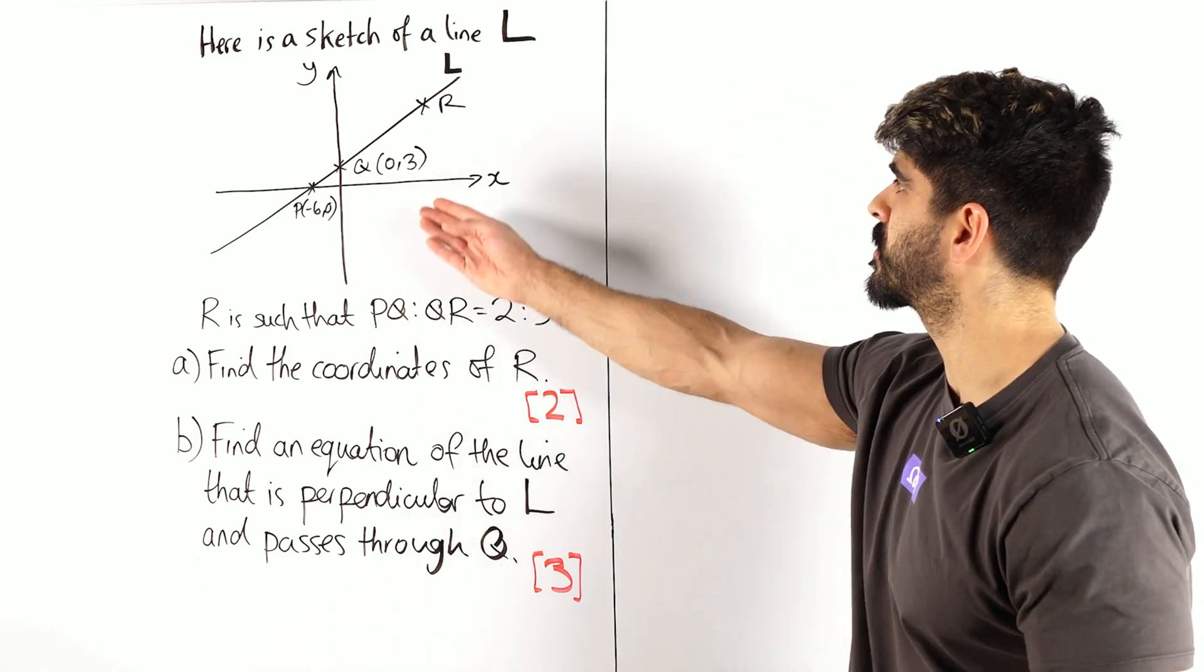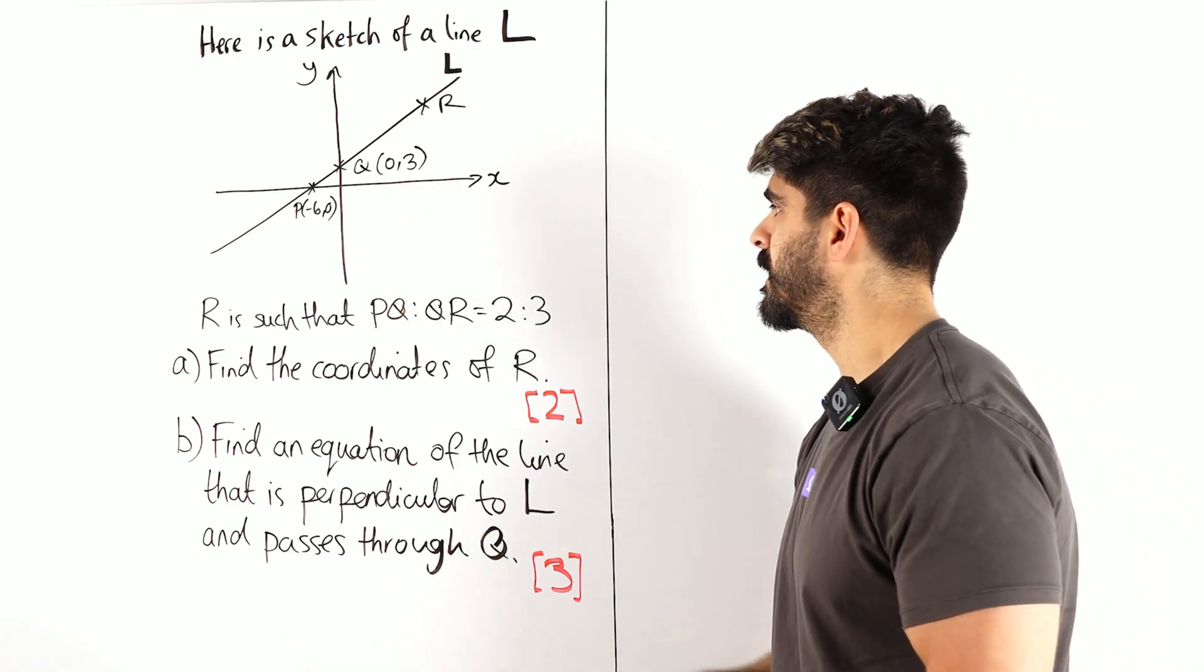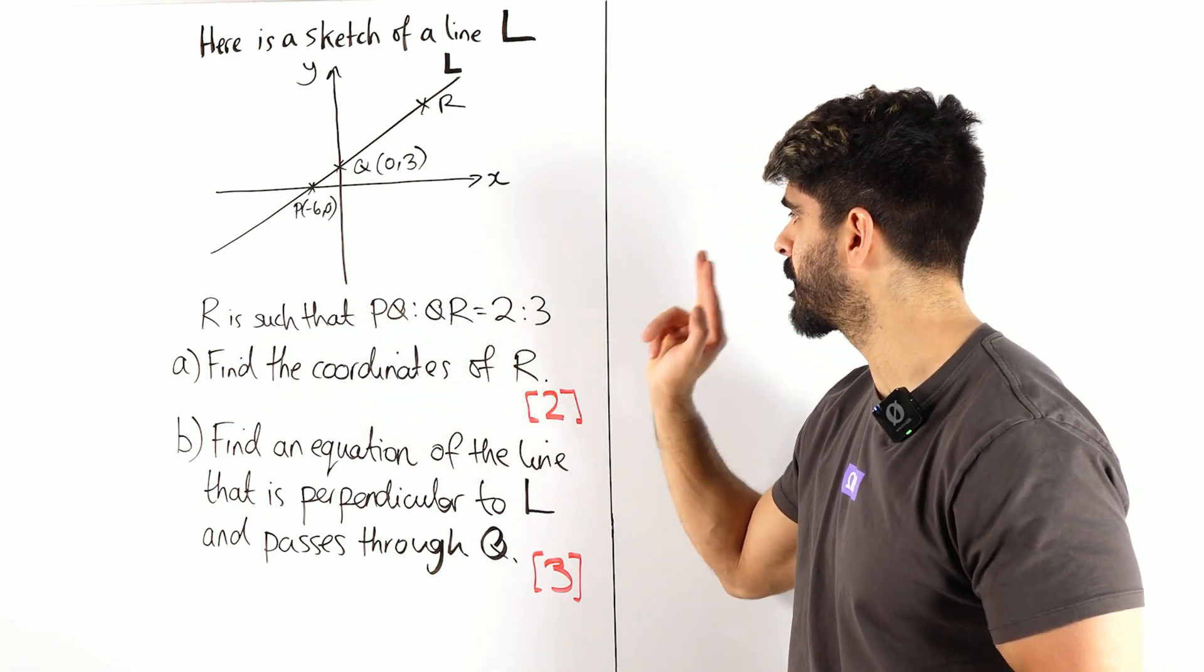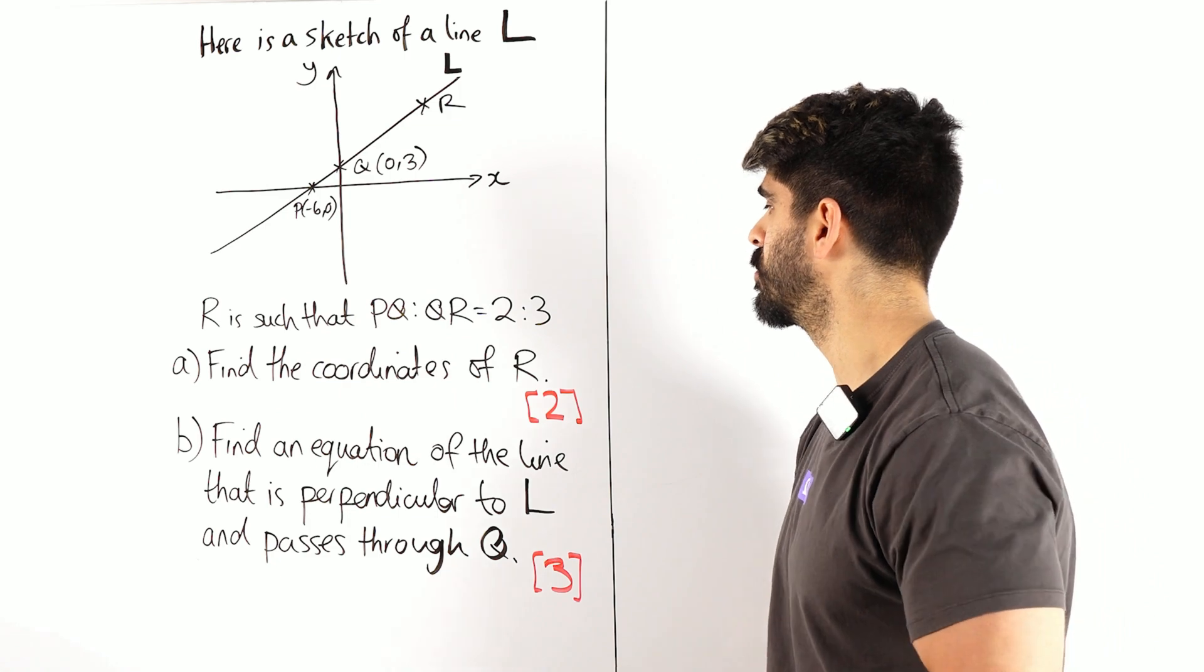So what's this saying here? We've got a sketch of the line L. It says this coordinate R is such that the ratio of PQ to QR is 2 to 3. Find the coordinates of R.